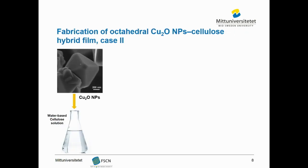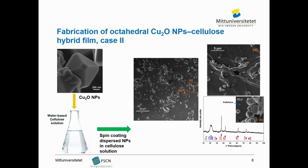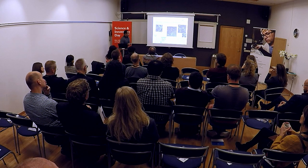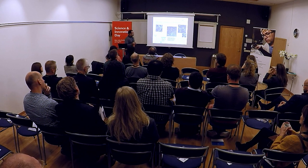For instance, the synthesized octahedral cuprous oxide nanoparticles are dispersed in a water-based cellulose solution, and then by spin coating of this suspension we produce a cuprous oxide nanoparticle–cellulose film. Here are some characterizations by high-resolution TEM and also XRD which prove the distribution of cuprous oxide nanoparticles inside the cellulose matrix. This material has potential applications as a catalyst, photocatalyst, gas sensor, solar cell, and biomedical material.